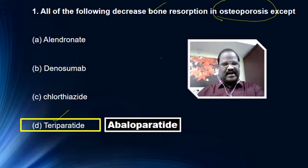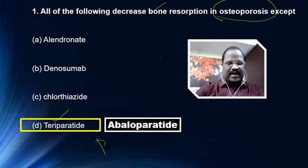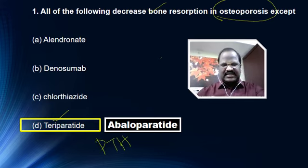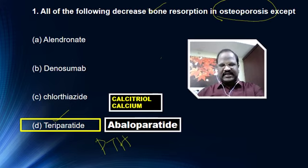Remember, teriparatide and abaloparatide are parathormone analogs having osteoblastic action, promoting bone growth, useful in the treatment of osteoporosis. Other important osteoblastic drugs are calcitriol — the active form of vitamin D — and calcium, which also has osteoblastic action.